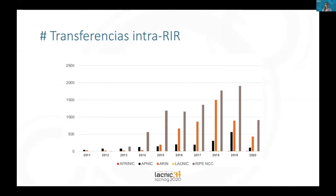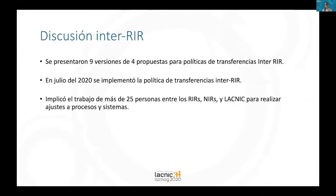Another interesting fact is comparing transfers that take place in other RIRs — for example, RIPE NCC, ARIN, APNIC, and AFRINIC. We note that there is a growing trend of intra-regional transfers in each of the different RIRs. We can clearly see that RIPE and ARIN are the RIRs that have the largest number of transfers compared to the other regional registries.